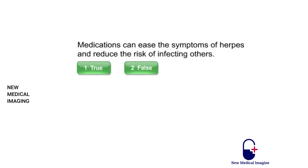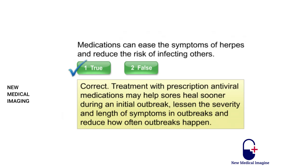Medications can ease the symptoms of herpes and reduce the risk of infecting others — correct. Treatment with prescription antiviral medications may help sores heal sooner during an initial outbreak, lessen the severity and length of symptoms, and reduce how often outbreaks happen.